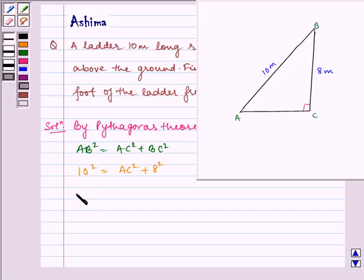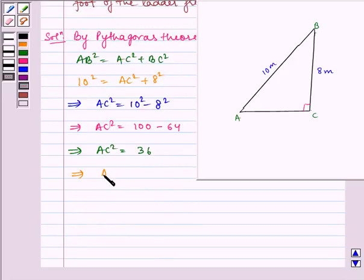So it implies AC square is equal to 10 square minus 8 square, which implies AC square is equal to 100 minus 64, which implies AC square is equal to 36, which implies AC is equal to 6.